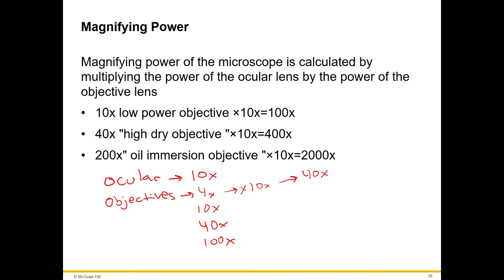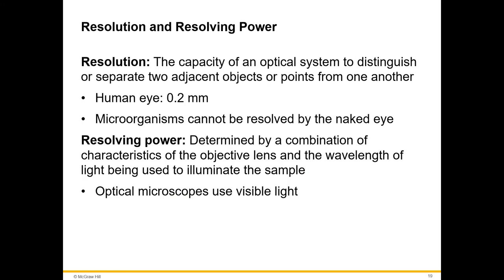Resolution is the capacity of an optical system to distinguish or separate two adjacent objects or points from one another. Microorganisms cannot be resolved by the naked eye, so they are so small that we can't distinguish them or separate them. If there were two cells right next to each other, we wouldn't be able to tell that it's two cells. We would need an apparatus with a higher resolving power than what our eye would have.